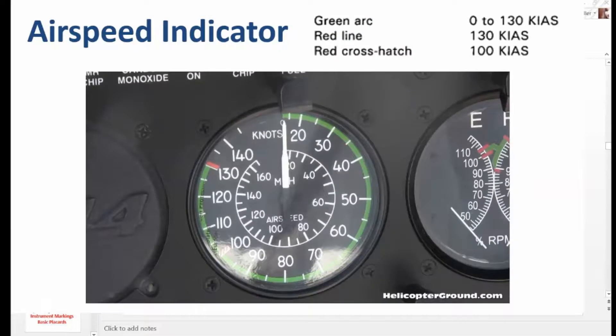Instrument markings. Airspeed indicator. Green arc, zero to 130 knots indicated airspeed. Red line, 130 knots indicated airspeed. Red crosshatch, 100 knots indicated airspeed.